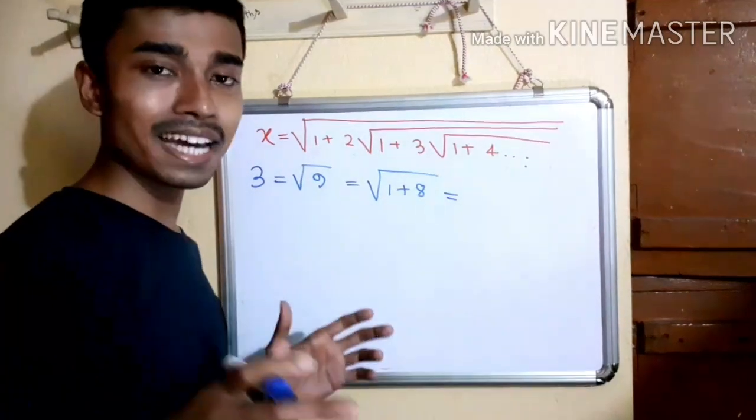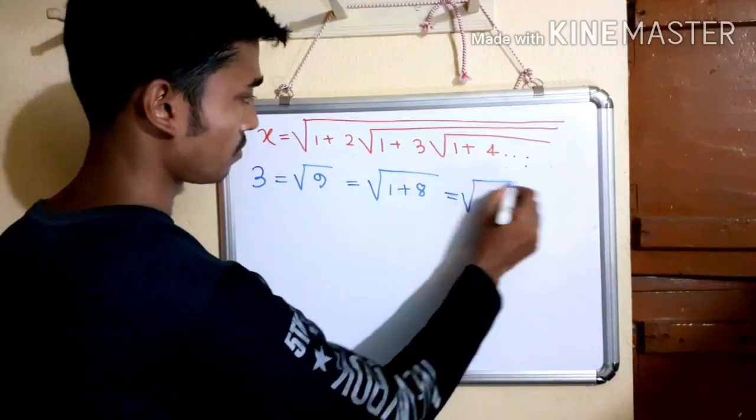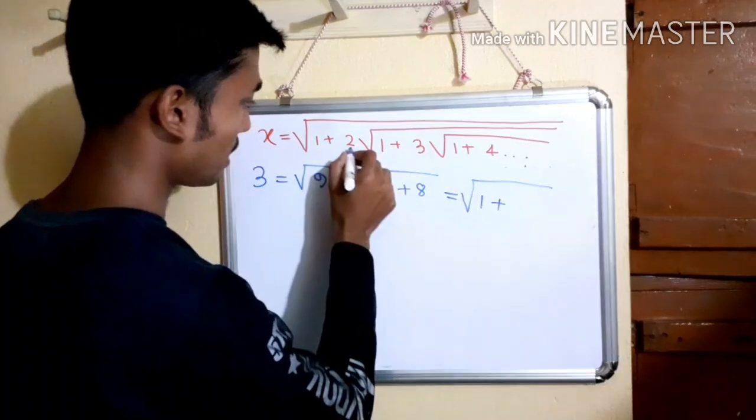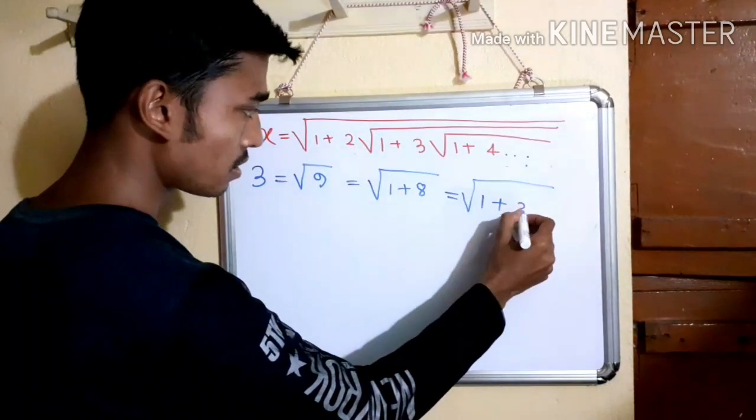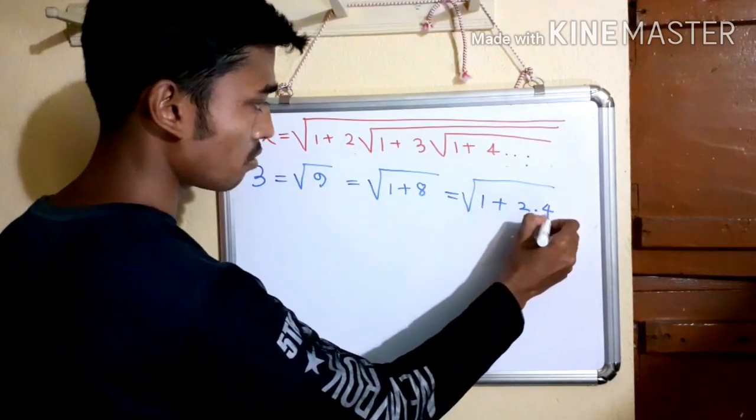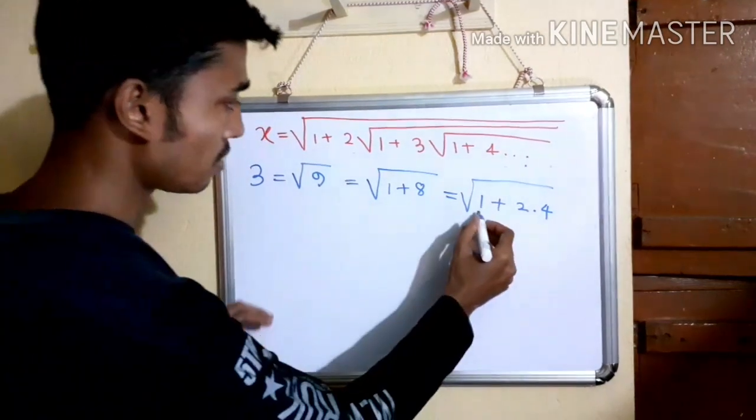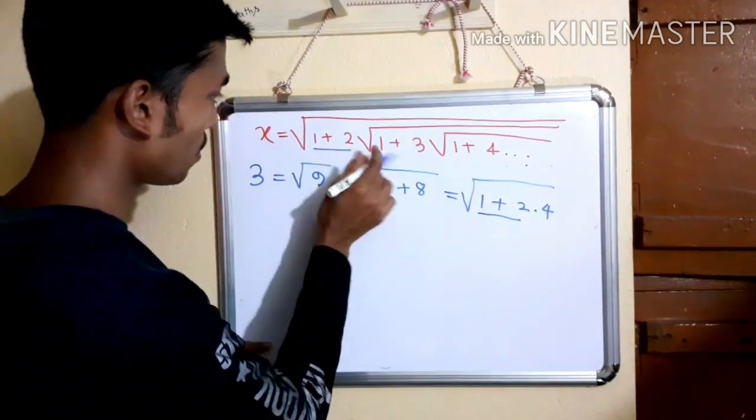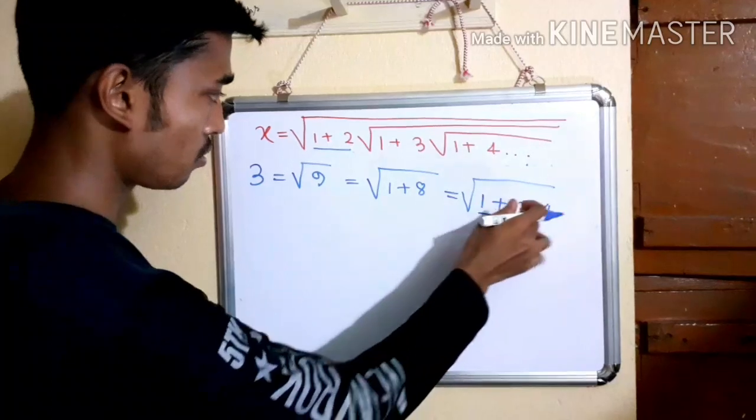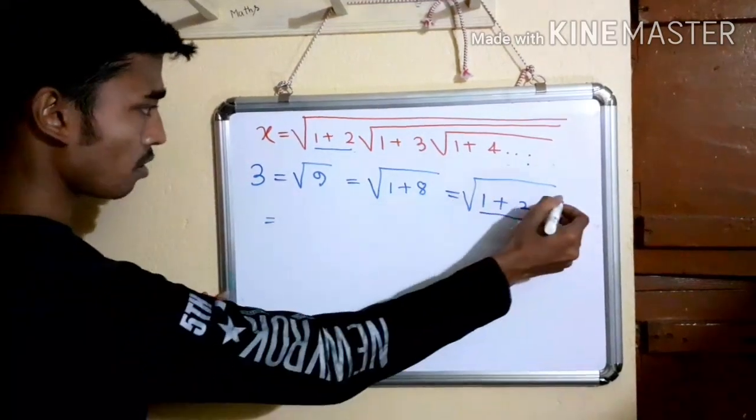What is 9? 1 plus 8. Now the magic happens. What is 8? 8 means 2 into 4. So 1 plus, and here is 2, and here is 2 into 4.